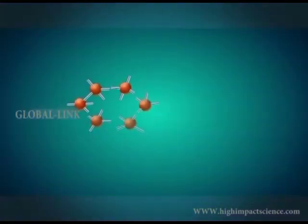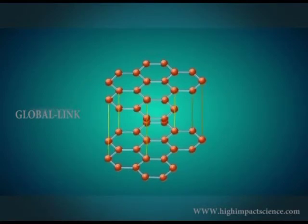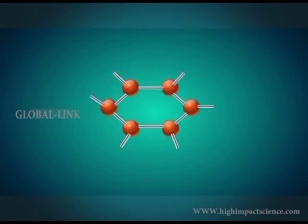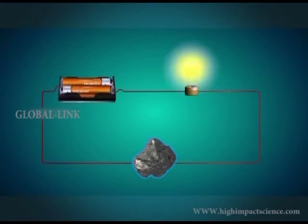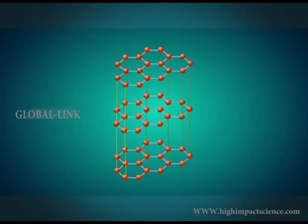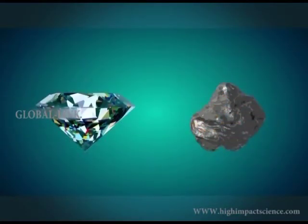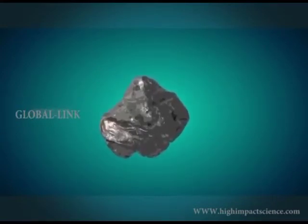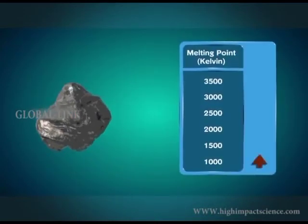In graphite, each carbon atom is bonded to three other carbon atoms by covalent bonds, resulting in hexagonal rings which are arranged in layers above each other. One of the carbon-carbon bonds is a double bond, and thus the valency of carbon is satisfied. Since one electron of each carbon atom in graphite is free to move about, graphite is a good conductor of electricity. The layers are held together by weak Van der Waals forces. Due to its structure, graphite is not as hard as diamond and is greasy. It is gray in color and opaque with metallic luster. Graphite's density varies from 2 to 2.5 grams per cubic centimeter and melts at 1,800 Kelvin.